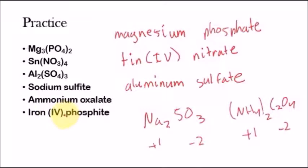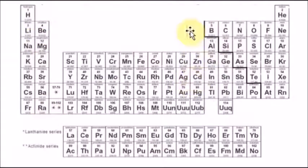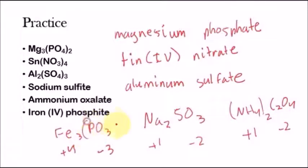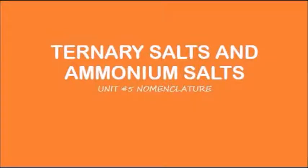Final one: iron(IV) phosphite. Iron is not in these two rows and it's not one of the special elements, which is why it has a Roman numeral. Phosphite is PO3. Iron has a plus four charge because of the Roman numeral IV, and phosphite has a minus three charge. We flip: three goes on the iron and four goes on the phosphite. So the formula is Fe3(PO3)4. Make sure you do the practice attached to this to master the concept — that's basically everything you need to know about naming ternary salts and ammonium salts.